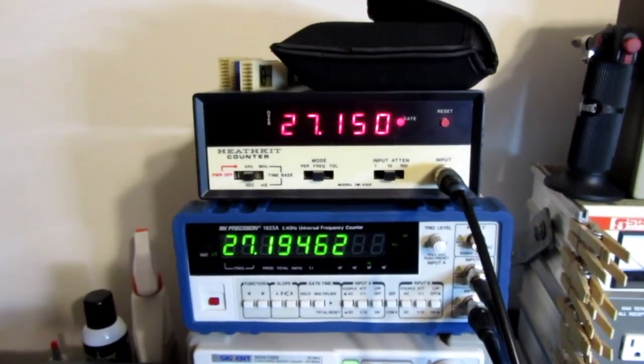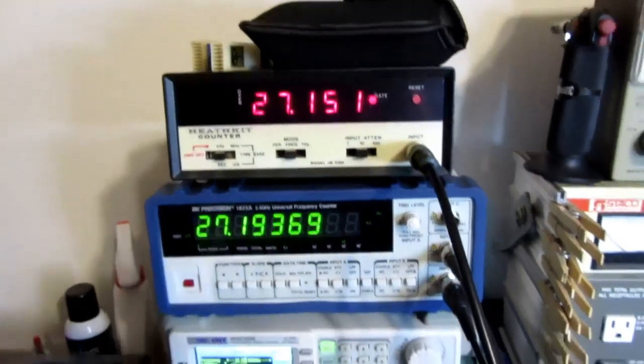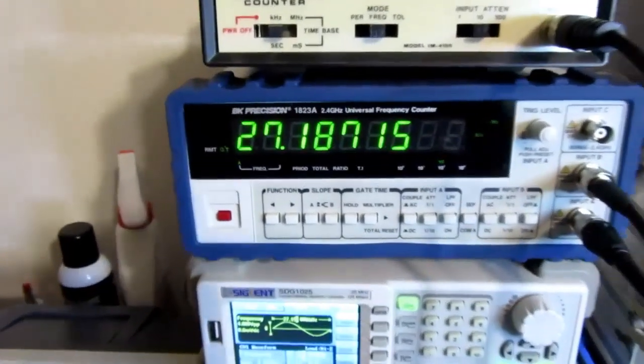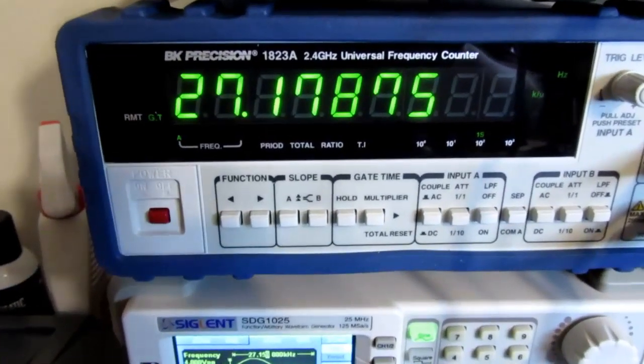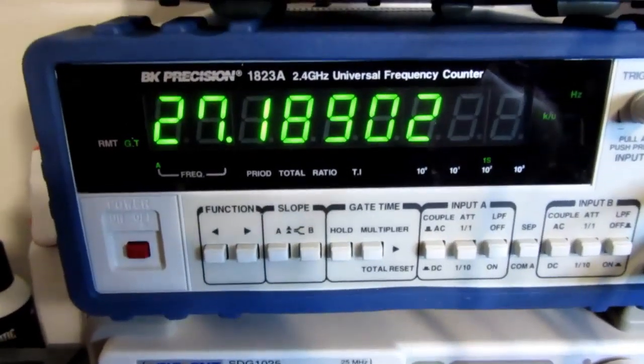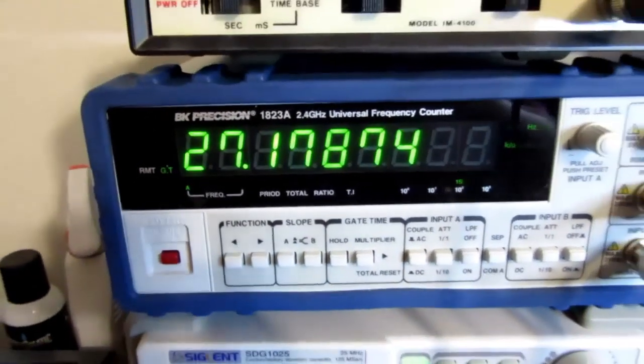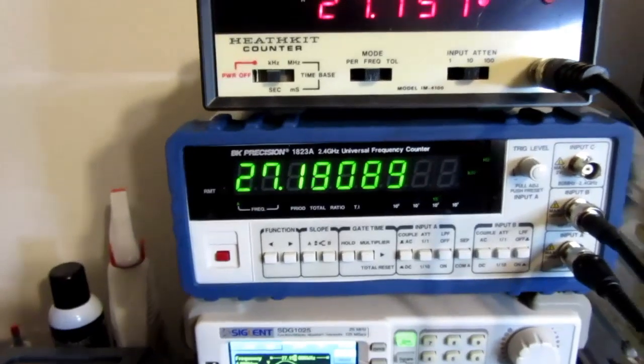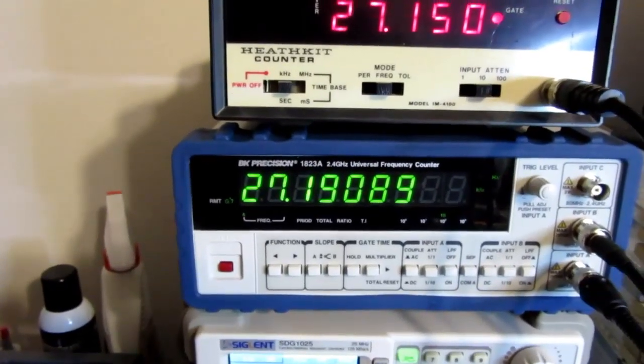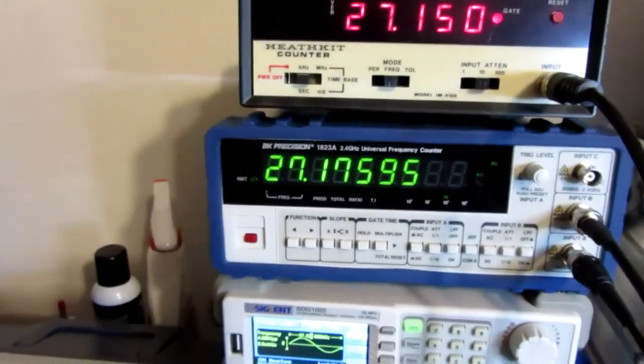And I hadn't had it calibrated in quite a while, so I ended up getting this BK or BK Precision model 1823 universal frequency counter. It's a 2.4 gigahertz top end.